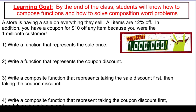We're going to write a function that represents the sale price — the 12% off. To figure out how much money we're going to spend on our item after taking 12% off, we take the price, whatever it is, minus 12% of the price. So 0.12 represents 12%. For example, an item costs $10 — I would say $10 minus 12% of $10. That part, the 12% of P, represents what I'm going to save.